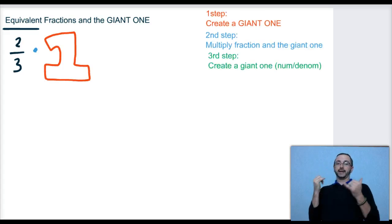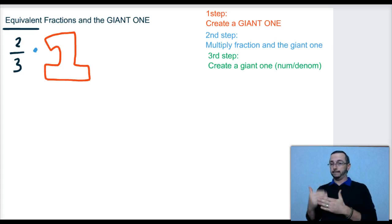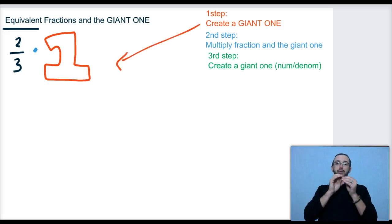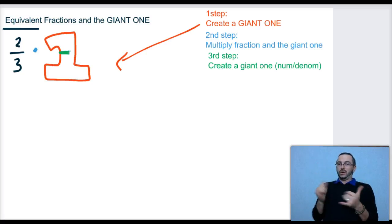Our third step in solving and how to make an equivalent fraction is to create a giant one with the numerator and denominator. Now we've already created a giant one here. We drew a big one. Now we're really going to figure out what goes on the inside, and we're going to have a numerator and a denominator to represent that.